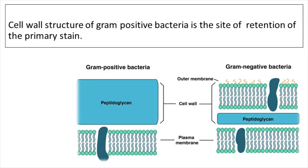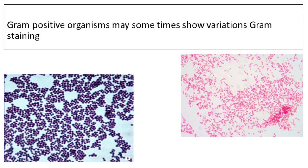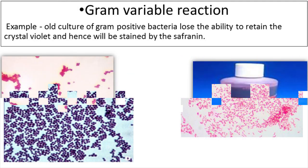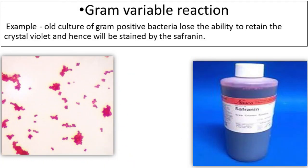Although Gram negative organisms consistently fail to retain the primary crystal violet stain, Gram positive organisms may sometimes show variations in this respect, known as Gram variable reaction. For example, most times old cultures of Gram positive bacteria lose the ability to retain the crystal violet and hence will be stained by the safranin.